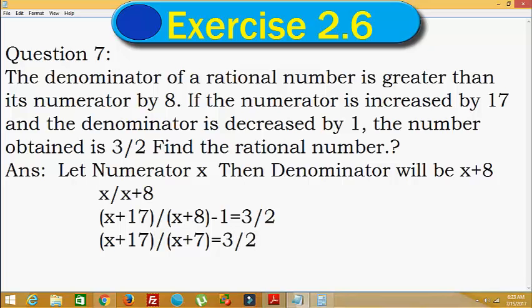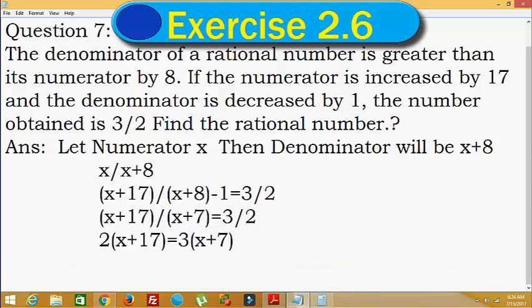Now using cross multiplication: x plus 17 into 2 is equal to x plus 7 into 3. That is 2 times x plus 17 equals 3 times x plus 7. So 2x plus 2 times 17 is 34, equals 3x plus 3 times 7 is 21.